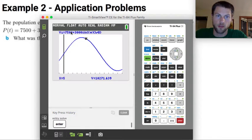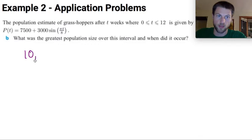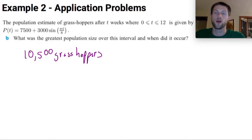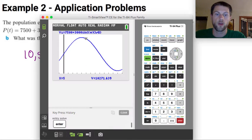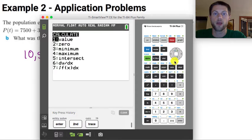It is, it's the midline plus the amplitude. So I actually know that this is going to be 10,500 grasshoppers. But let's talk quickly about how I can use the calculator to calculate that for me. If I go back to my calculator, and now I go into second calc, I can calculate the maximum, which is what I'm looking for.